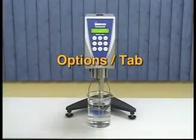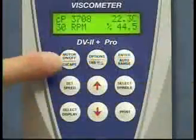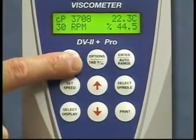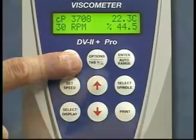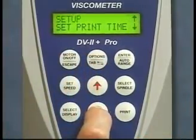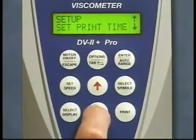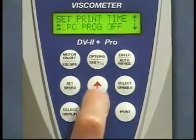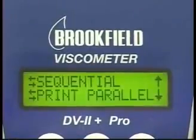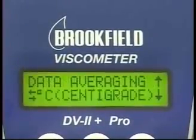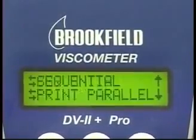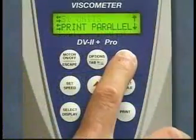Options tab. By pressing the options tab key, the user will access the options menu of the instrument. Once in the options menu, the user can select the appropriate option or parameter by using the arrow keys or the tab key. Once the user has selected the specific setup parameter they wish to use, press the enter auto range key to accept this parameter.